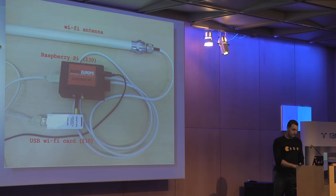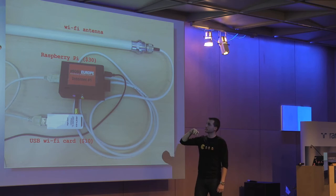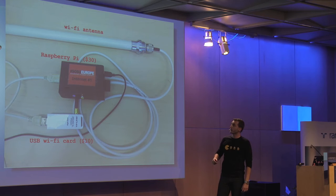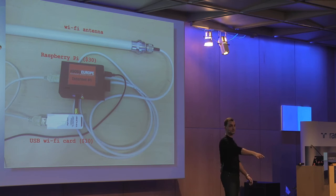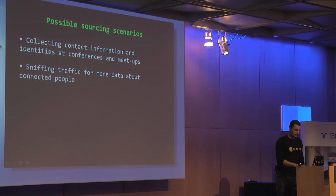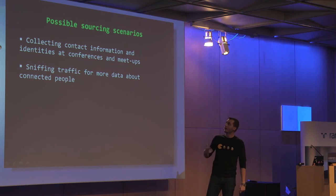Simple device: Raspberry Pi — maybe you know it, it's the small embedded computer used everywhere now, very popular. Simple USB Wi-Fi card and antenna — it's a question of a few bucks. You can see it under the desk. So again, possible sourcing scenarios: collecting contact information for people, identities at conferences, meetups, basically anywhere.